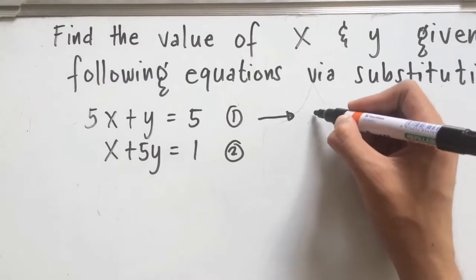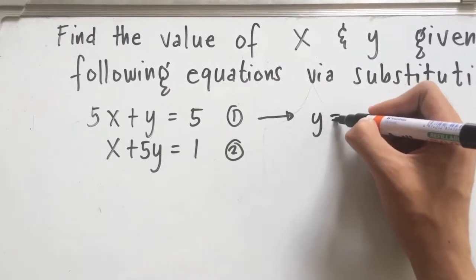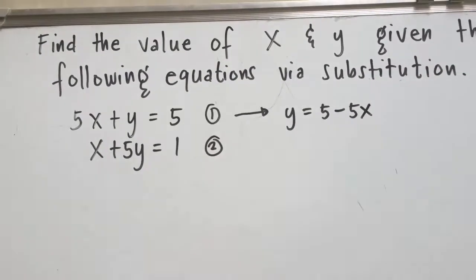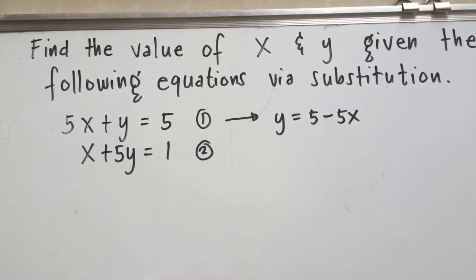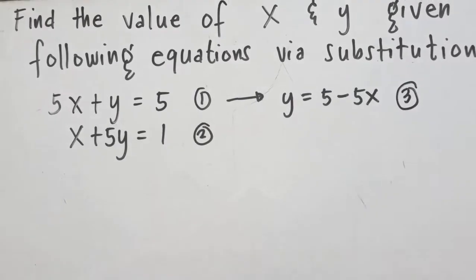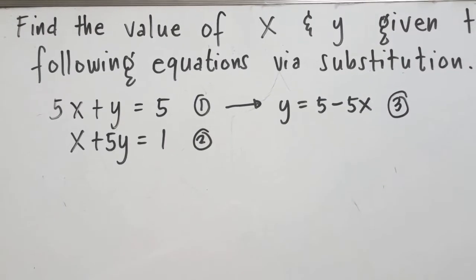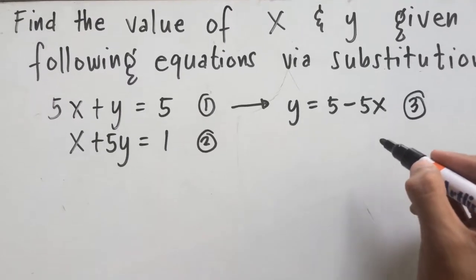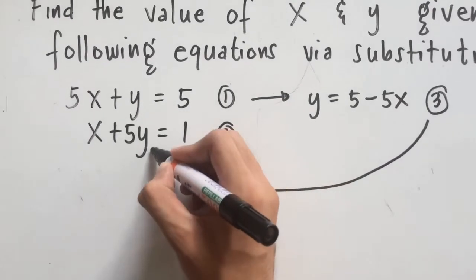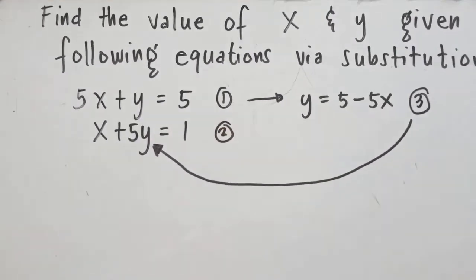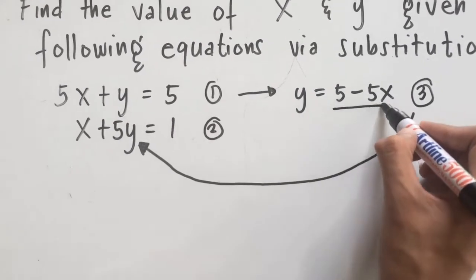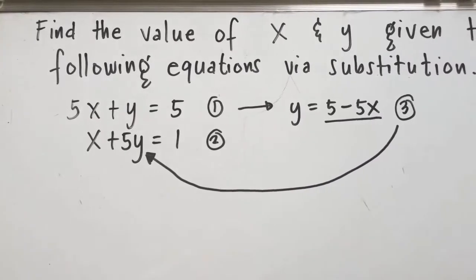First, we are going to deal with equation 1. We are going to get the equivalent of y, which is equal to 5 minus 5x. That's our derived equation from equation 1, so that's our third equation. Now, looking at equation 2, we can substitute equation 3 into equation 2 — substituting 5 minus 5x for the y variable.